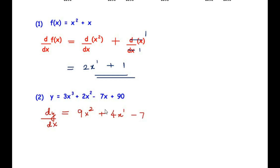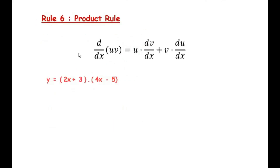Rule 6 is the product rule. If two terms u and v are multiplied together, then d/dx of (u·v) = u·(dv/dx) + v·(du/dx). Keep the first term as it is and differentiate the second, then keep the second term as it is and differentiate the first, and add the two results.